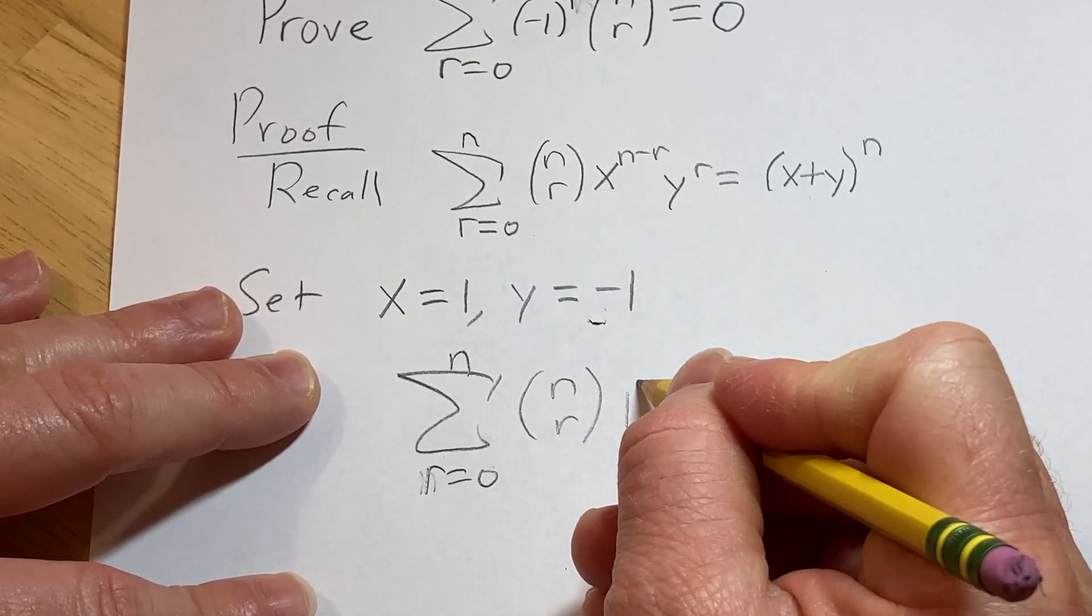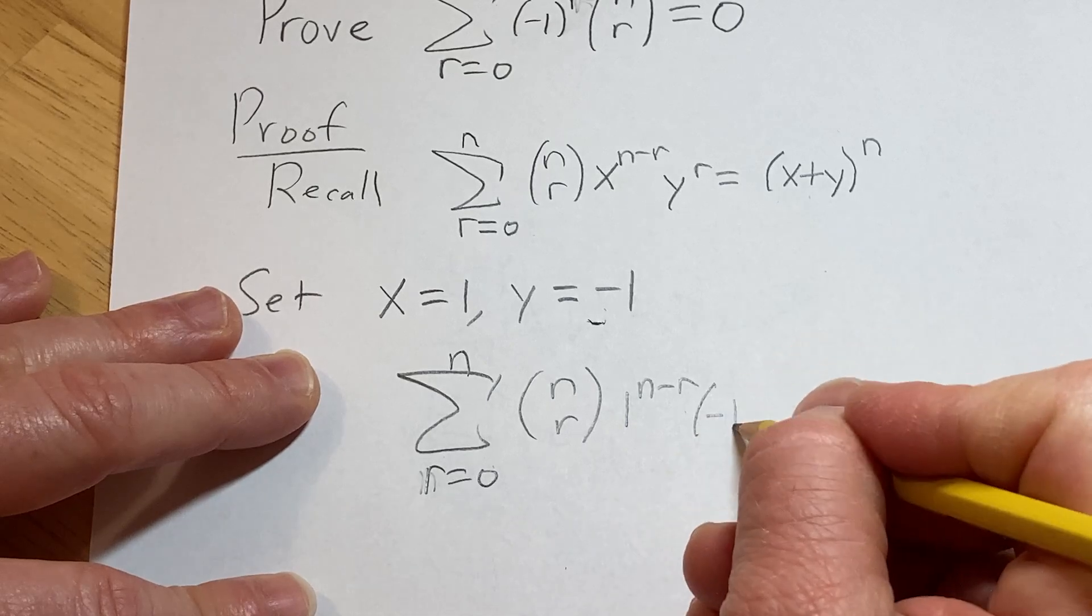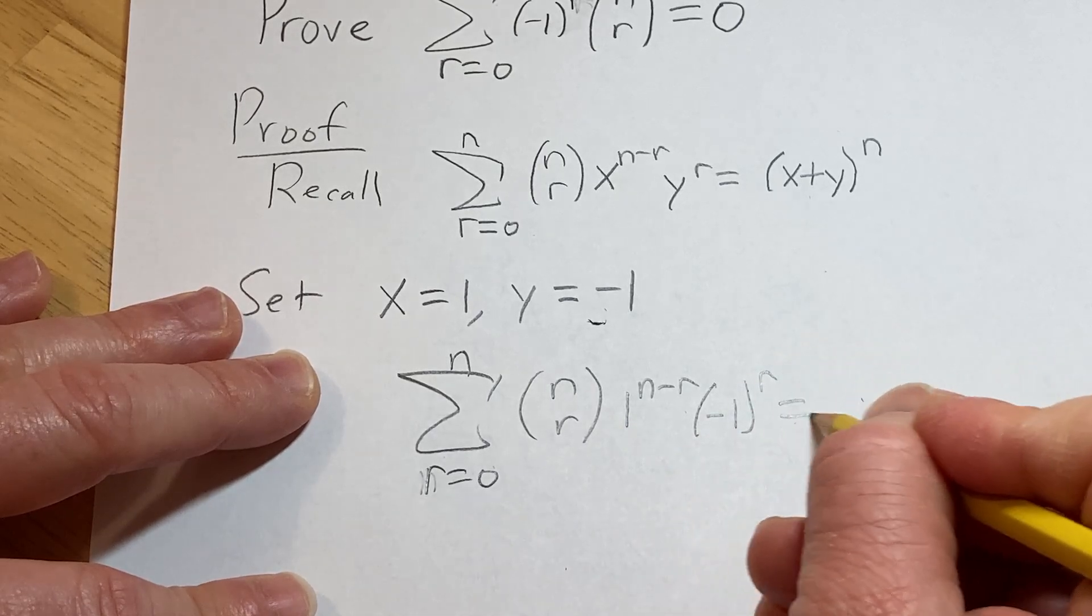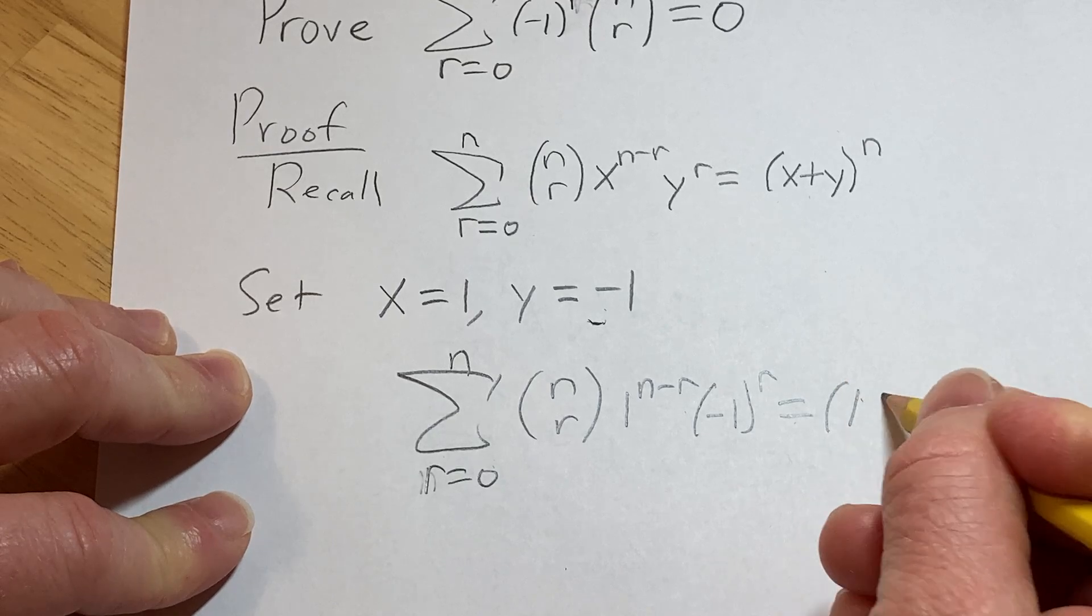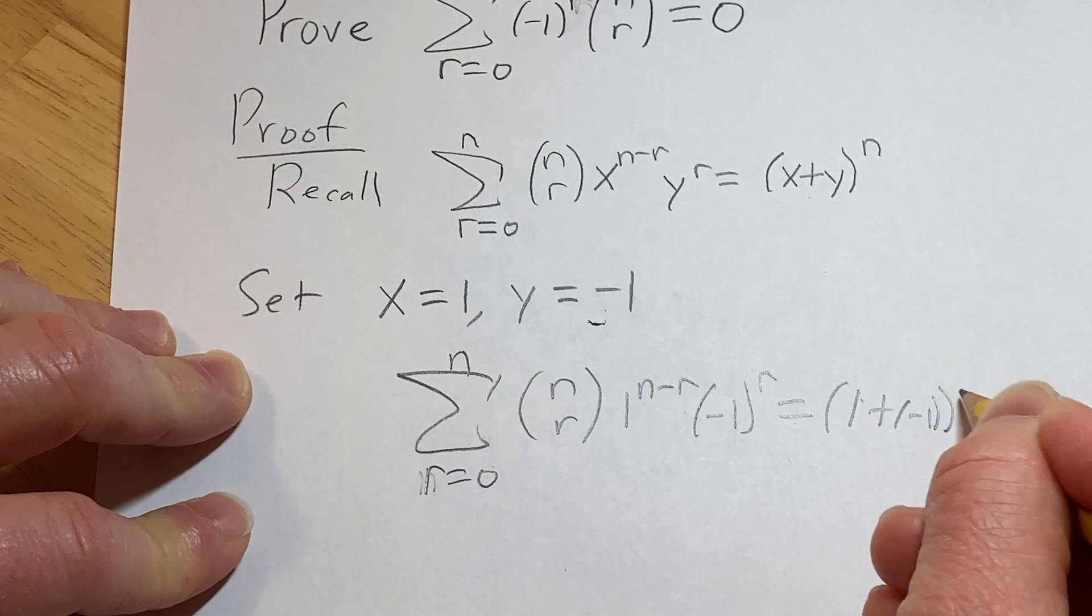So x is 1, so we get 1 to the n minus r. y is negative 1, so we get negative 1 to the r. Then over here we get 1 plus negative 1 to the n.